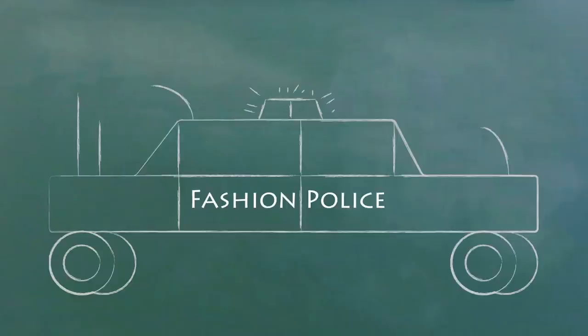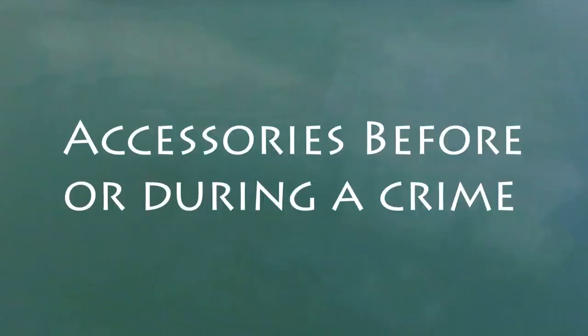You can be charged as an accessory, which is hilariously ironic if you're part of a gang that steals belts and handbags. There are two kinds of accessories. Those who help before or during the crime, and those who help after the crime has already happened.